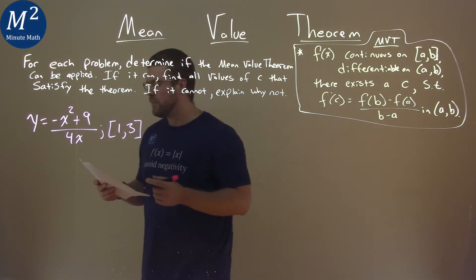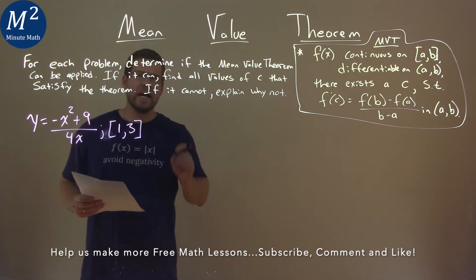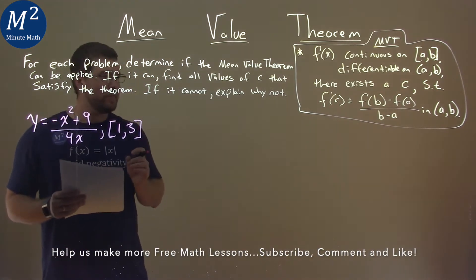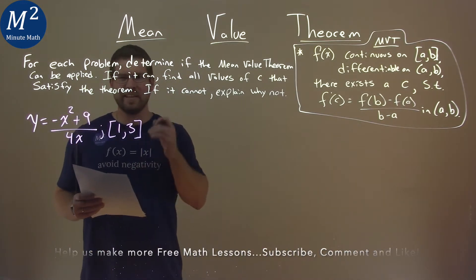We're given this problem right here, y equals negative x squared plus 9 over 4x, and we want to find if we can use the mean value theorem on our interval from 1 to 3, and if we can find the values of c that satisfy this theorem.